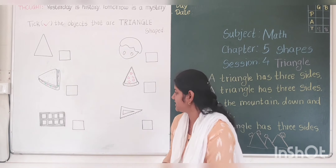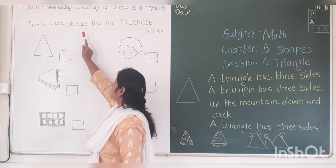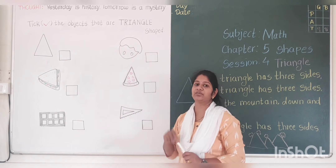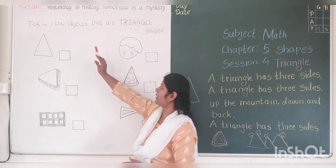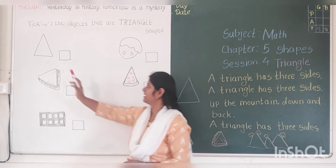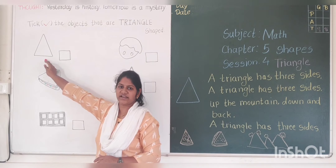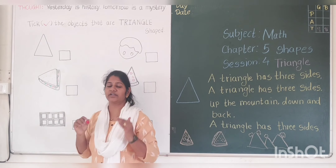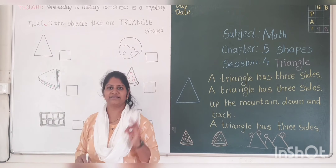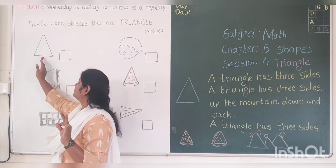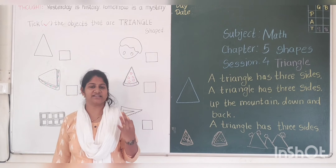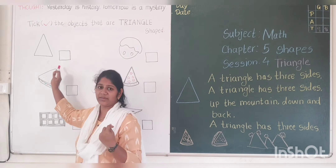Now see here. Take the objects that are triangle shaped. Here we have to take the objects that are in triangle shape. This is triangle shape. Let's count the corners and sides. 1, 2, 3. 3 corners. 1, 2, 3. 3 sides. 3 corners and 3 sides. It's a triangle shape.